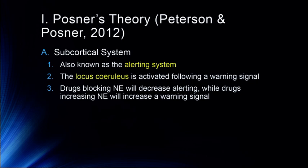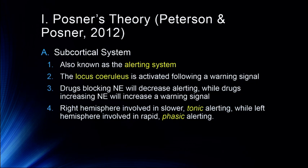Norepinephrine is released by a sympathetic nervous system response whenever we have a danger or alert signal. Drugs like amphetamines and methamphetamine cause substantial norepinephrine releases, increasing alerting and warning signals — which is why people become very alert and often paranoid, because their alerting system is constantly on. The right hemisphere appears involved in slower tonic alerting, our basic vigilance, while the left hemisphere is involved in more rapid phasic alerting.